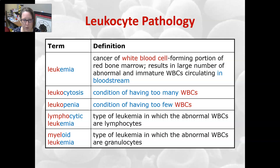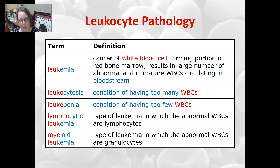Leukemia is different from leukocytosis. Leukocytosis is simply a condition of having too many white blood cells when the body is fighting off an infection — especially a bacterial infection. Leukemia involves an increase in abnormal white cells and is usually far beyond what you would see in leukocytosis.